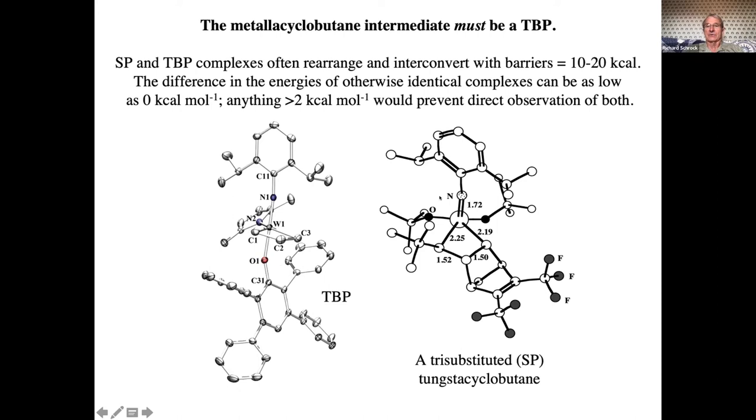It cannot be a square pyramidal shape, such as shown on the right here. This is a natural crystal structure of a substituted metallicyclobutane, because this particular one, and many others, depending on what ligands are around the metal, cannot convert to the required trigonal bipyramidal shape that is required for losing olefin.